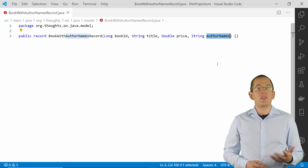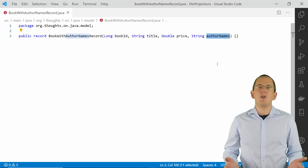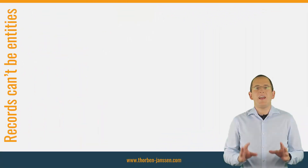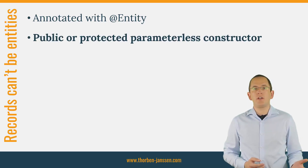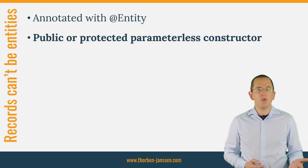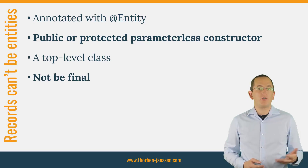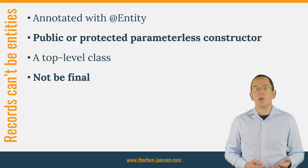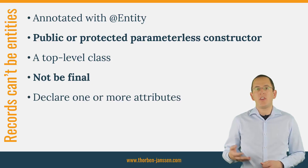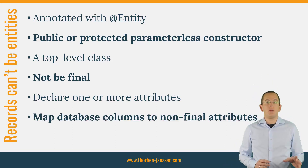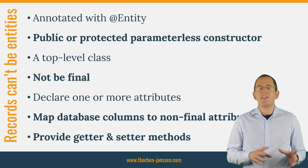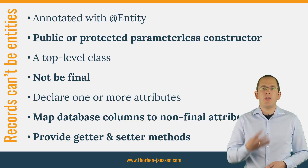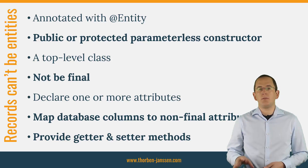Some of the features that make a Record easy to use also make it impossible to implement an Entity with it. As I explained in the JPA4Beginners online course, a JPA compliant Entity needs to fulfill a few simple requirements. It needs to be annotated with Entity, have a public or protected parameterless constructor so that the persistence provider can instantiate objects when mapping query results, be a top level class, not be final so that your persistence provider can generate proxies — for example, to offer lazy loading for to-one associations — declare one or more attributes that identify the Entity object, map database columns to non-final attributes, and provide getter and setter methods to access these attributes. If you are implementing your Entity as a standard Java class, these requirements are easy to fulfill. But the 4 requirements that are highlighted make it impossible to implement an Entity as a Java record.